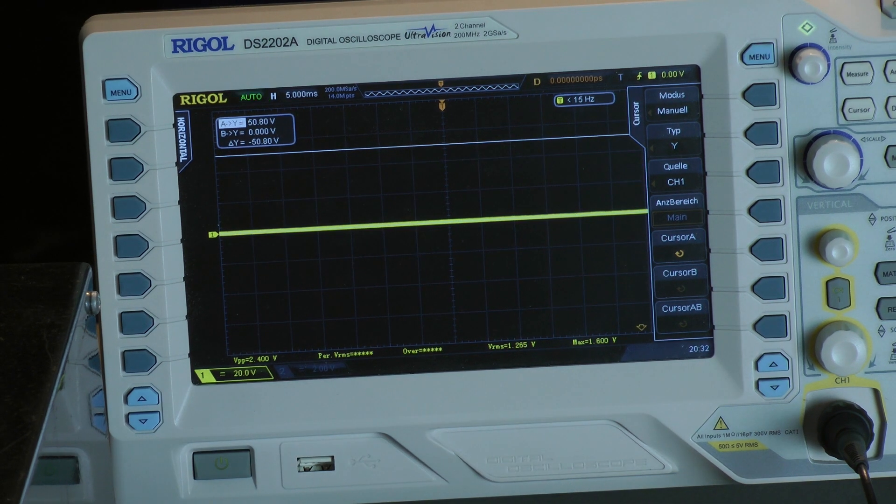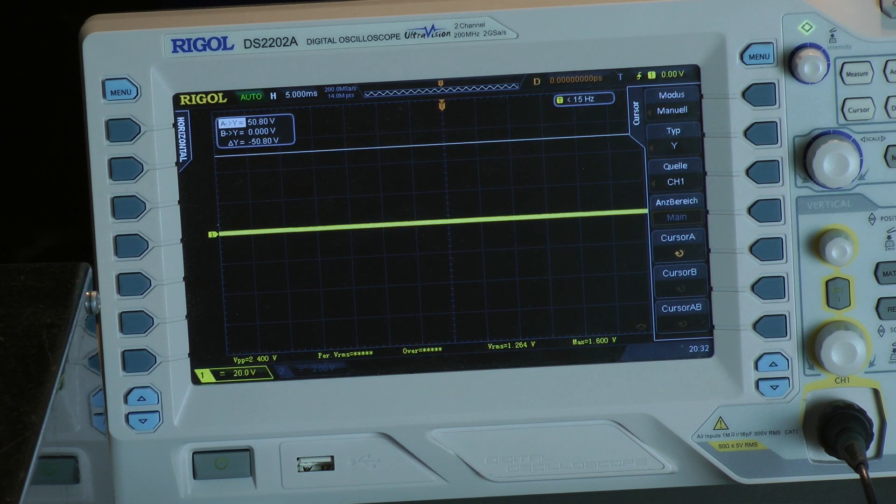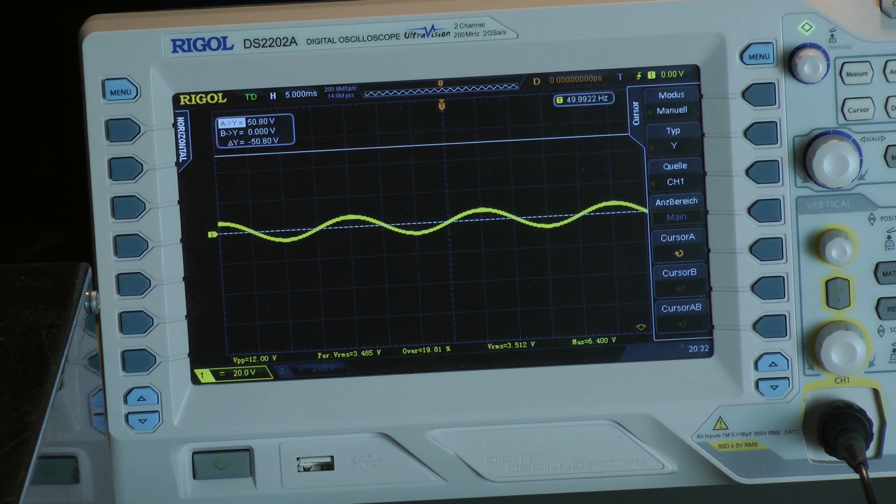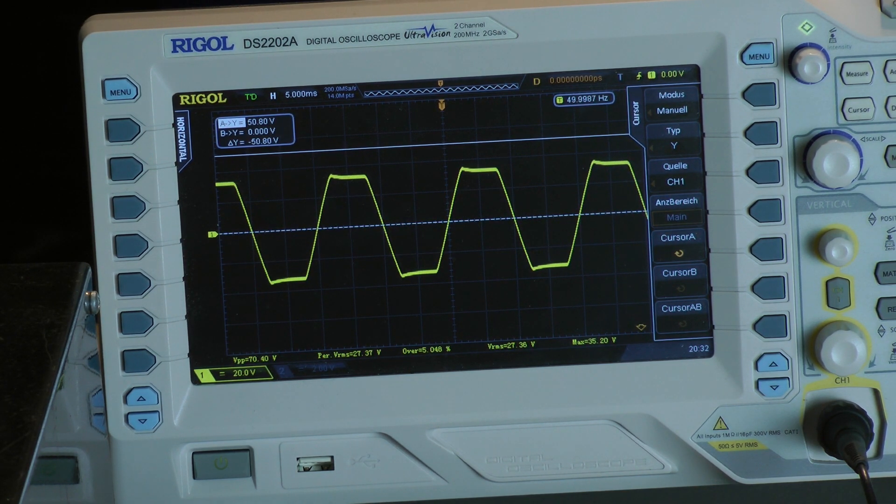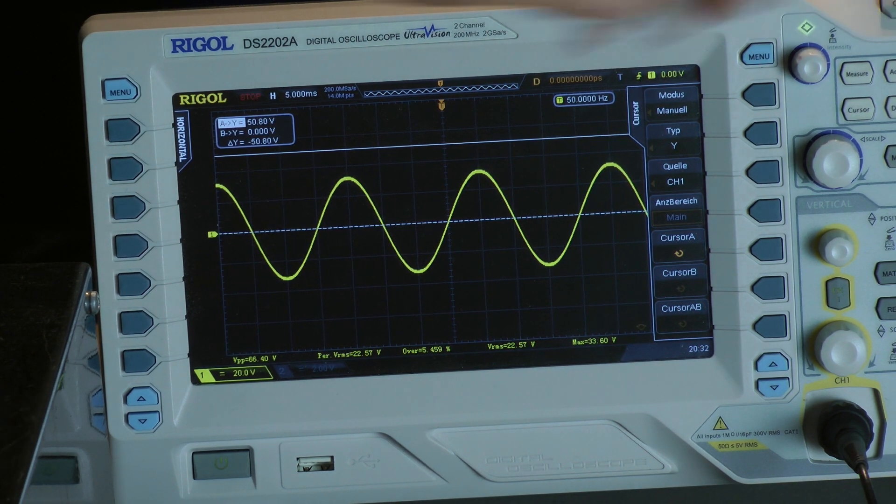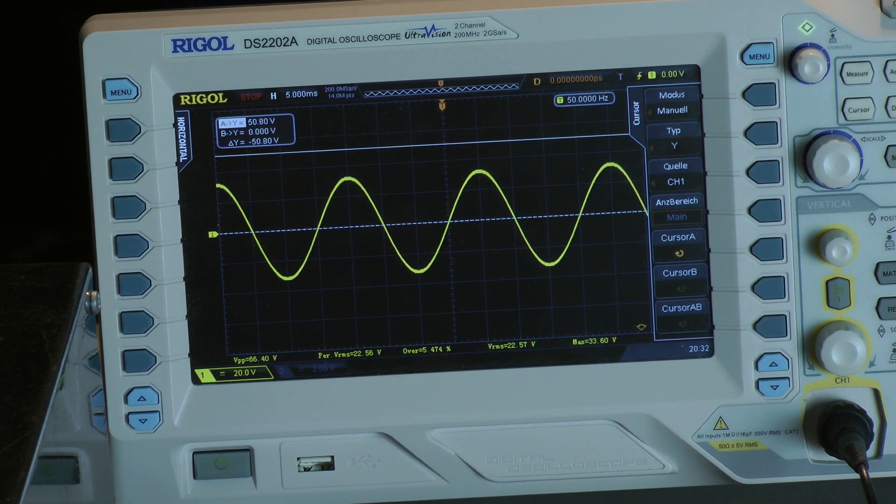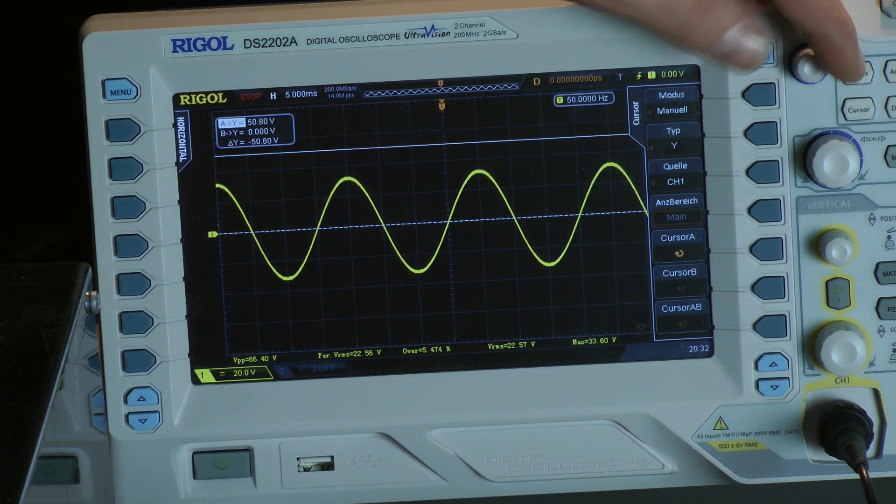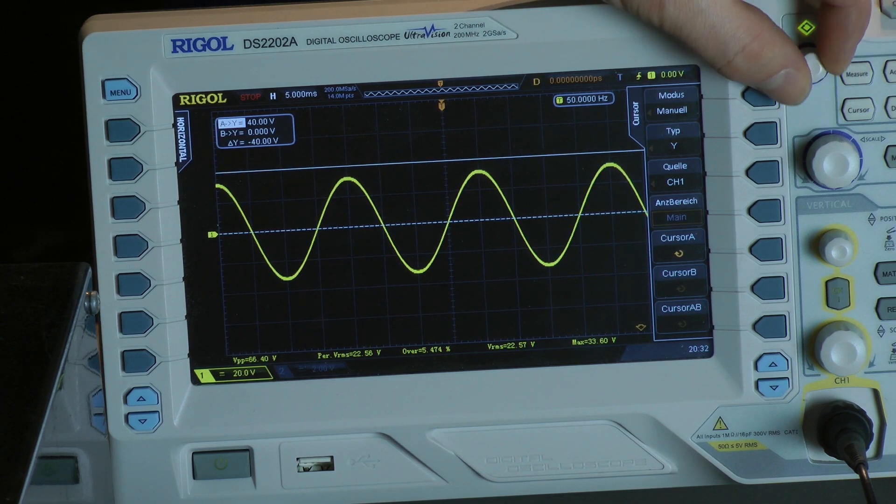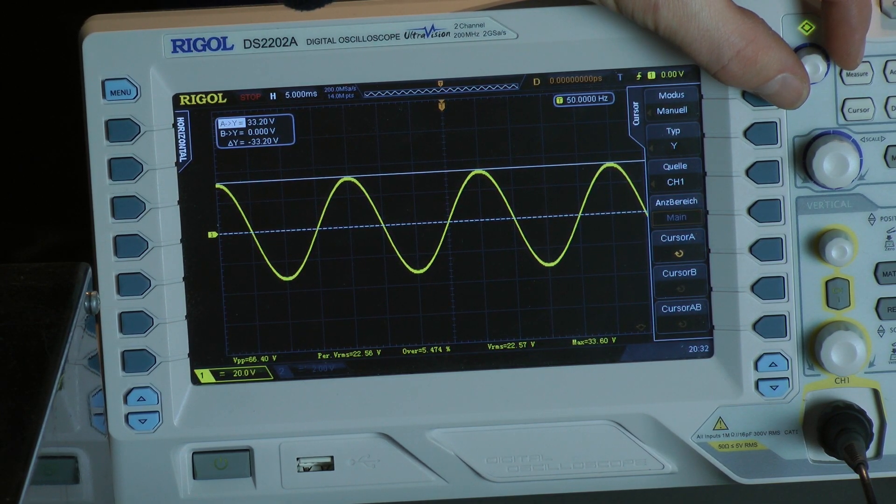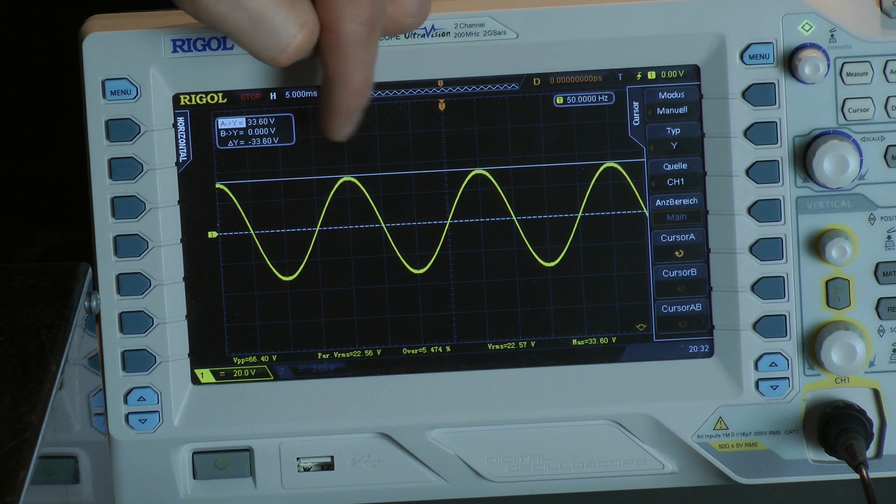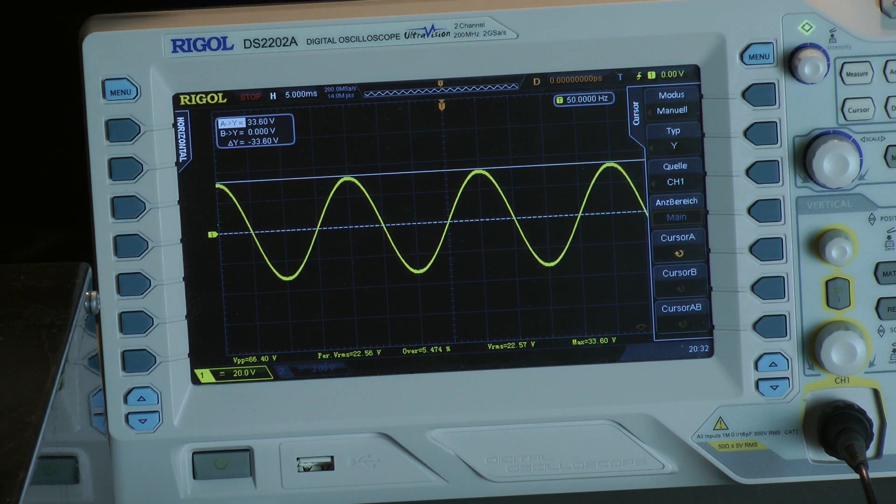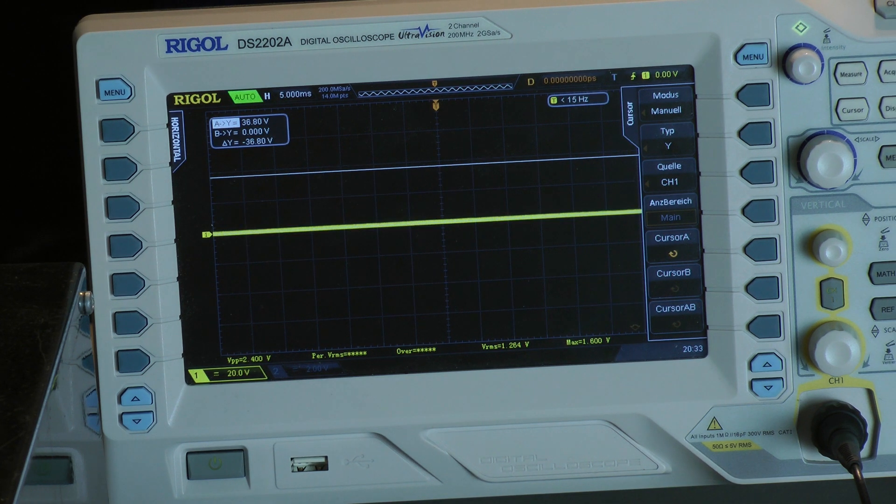That gives us 158 watts bridge mono 4 ohms, or 79 watts into a 2 ohm load continuous power with 1 kilohertz. For the 50 Hertz continuous power test at 2 ohms per channel, scope says maximum 33.6 volts.